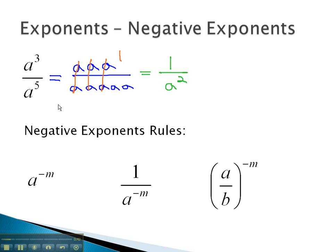However, we could have solved this problem a second way. We could have solved the original problem using the quotient rule, which says we subtract the exponents, 3 minus 5, which would give us a to the negative 2.